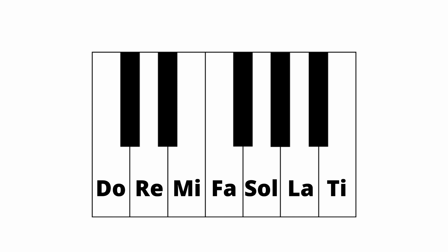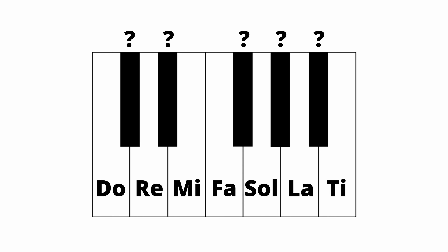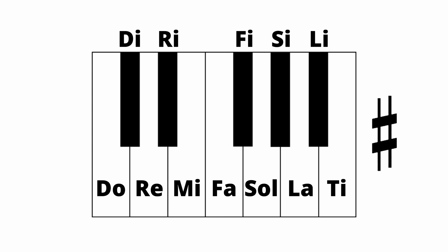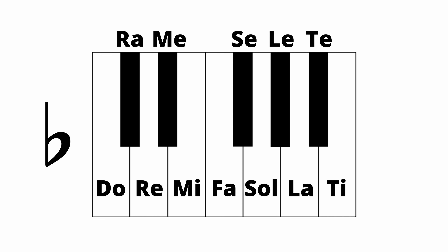That is the major scale. And if we happen to be playing the C major scale, those names would correspond to all the white keys. But what about all the notes in between? The sharp and flat notes in the chromatic scale also have their own syllable names. When we are singing a sharpened note, we use the following syllables: di, ri, fi, si, li. When we are singing a flattened note, we use: ra, me, se, le, te.